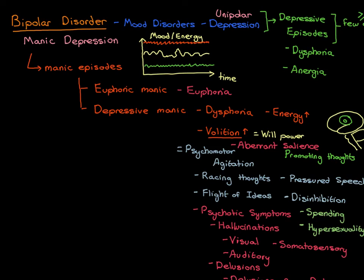Manic episodes can last from a few weeks to months to years. People with bipolar disorder can have manic episodes, then a period of normality, then a depressive episode, then normality again, then maybe another manic episode. The fact that they can go both ways — having depressive episodes and manic episodes — is why we call it bipolar disorder and why we call depression unipolar depression, to stress the difference; but both are fundamentally considered disorders of mood. In the next video we'll have a look at the monoamine hypothesis of mood disorders.